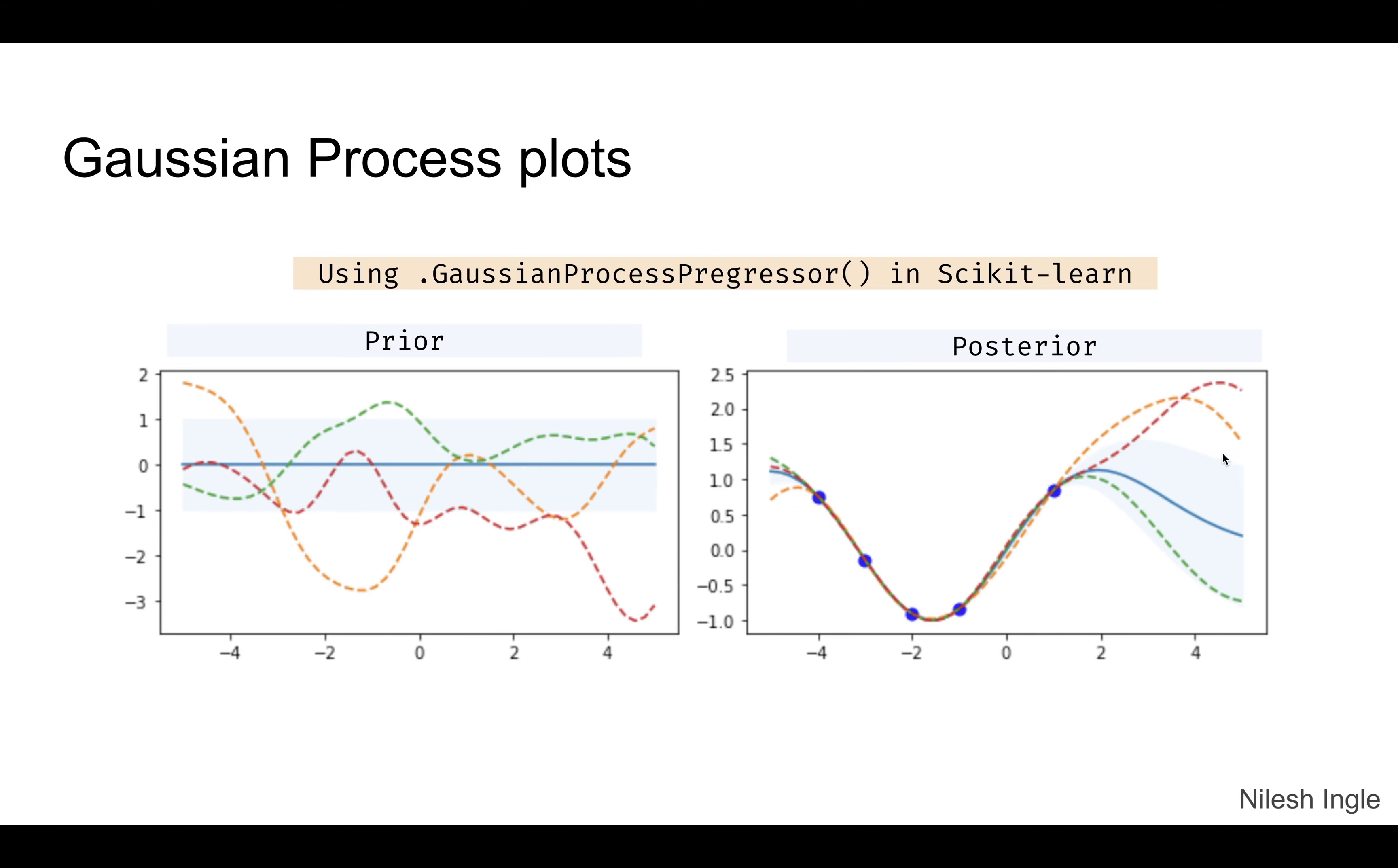On the left hand side we have the prior where the main best prediction is just the mean, and we can see a lot of wavy functions.